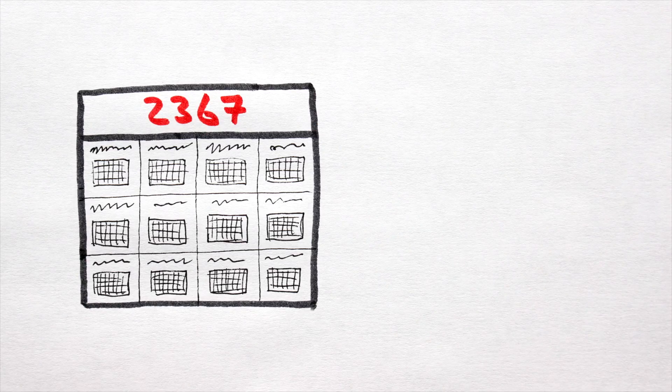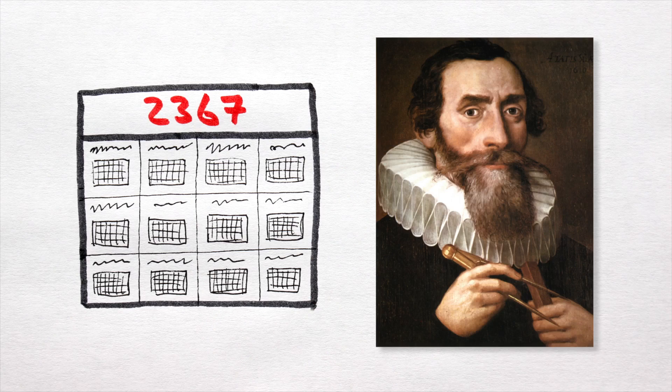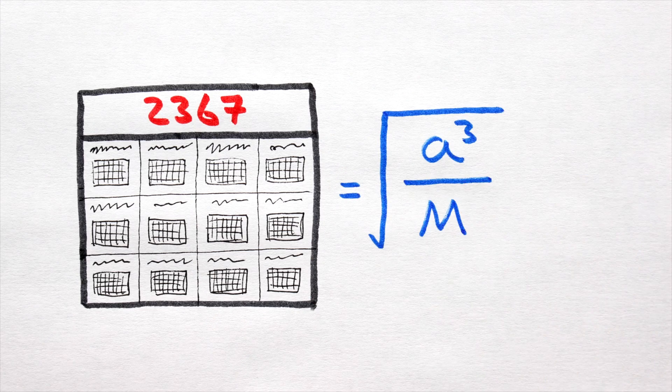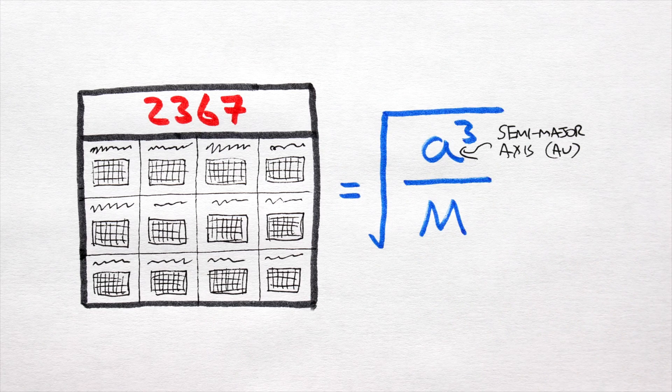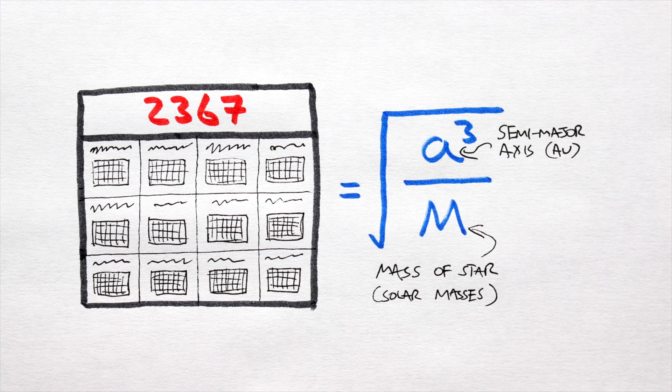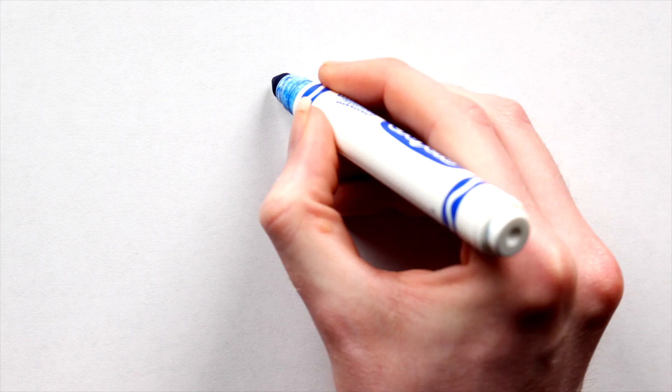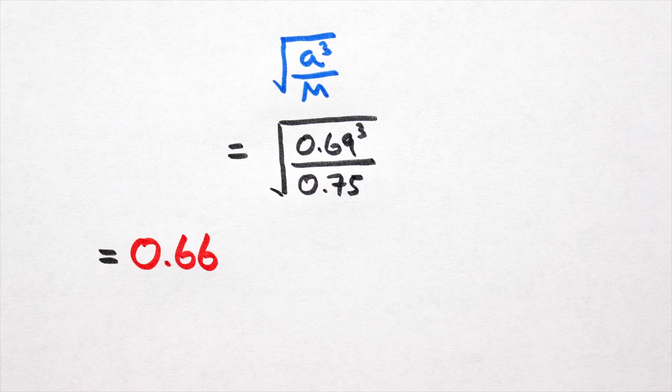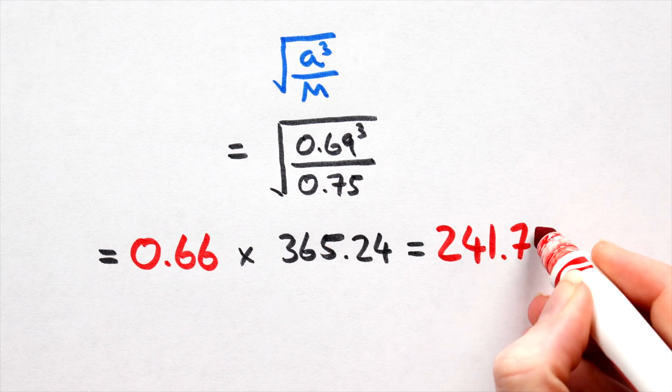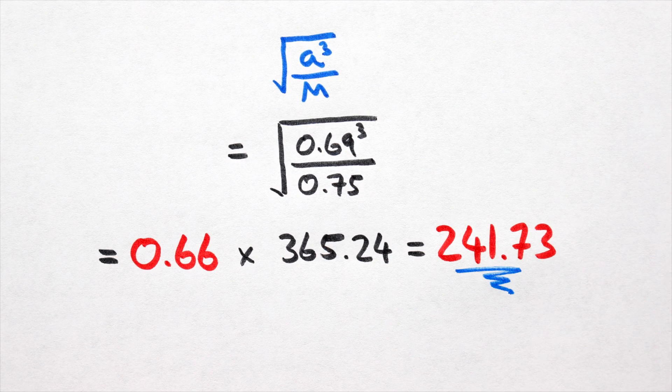Orbital Period. Like before, a year on our planet will, thanks to Kepler, be given by the square root of A cubed divided by M, where A is the semi-major axis and M is the mass of our star in solar masses. The numbers here tell us that our planet's year will be about two-thirds the length of an Earth year, or in other words, 241.73 Earth days.